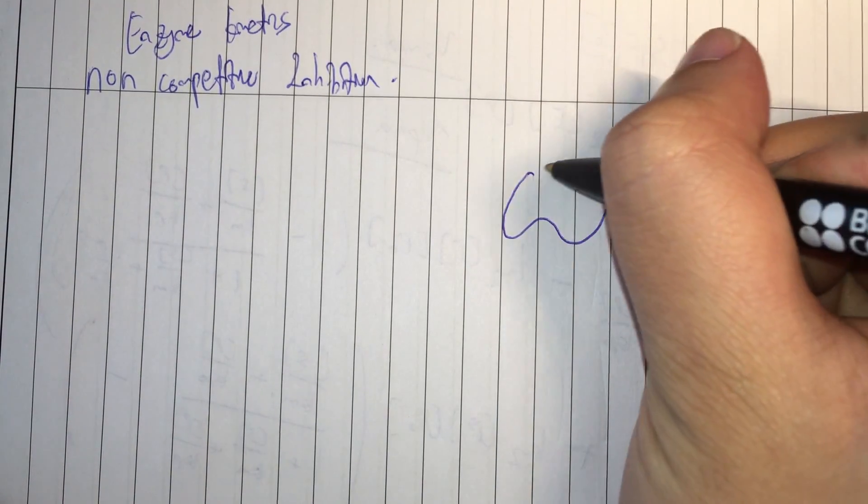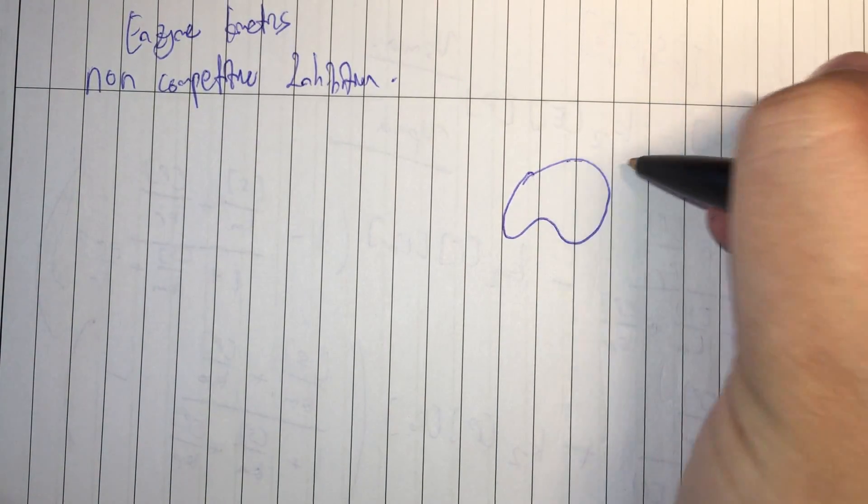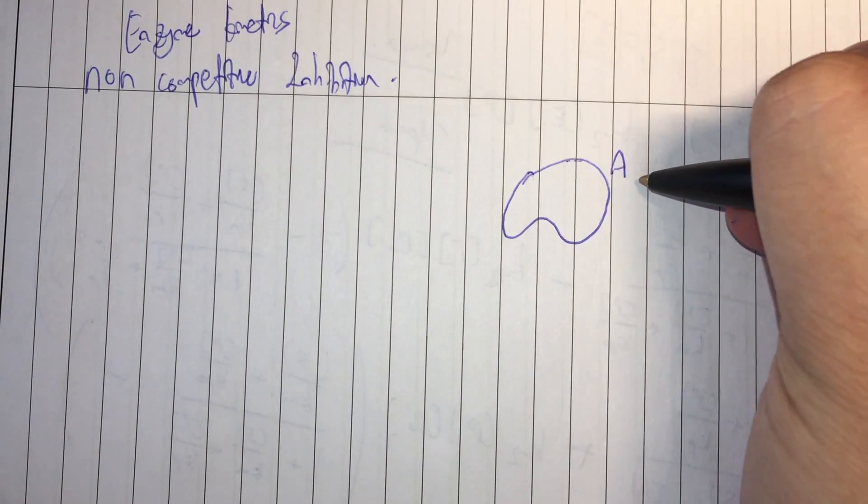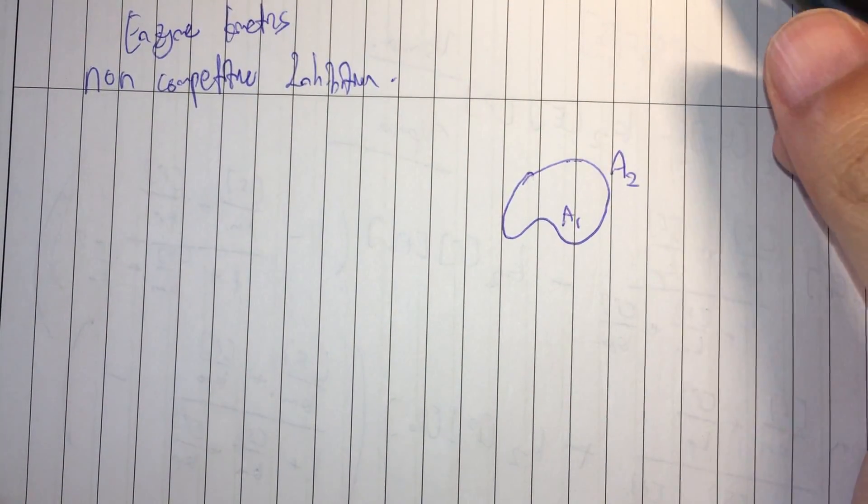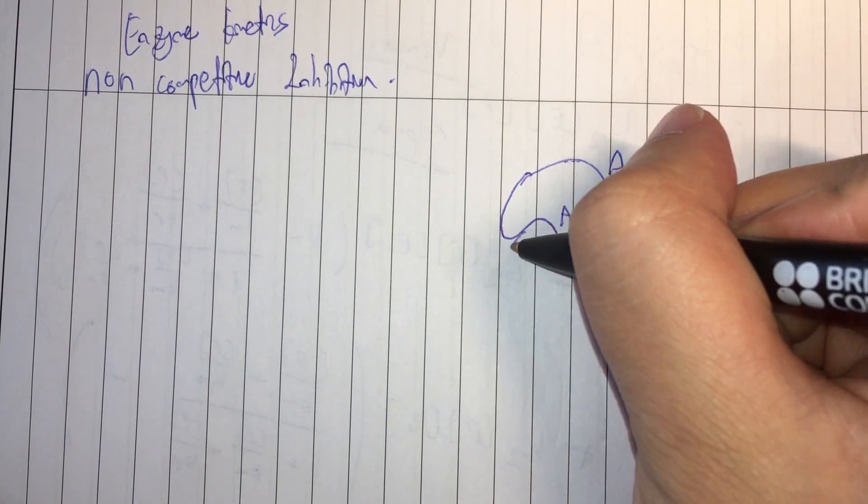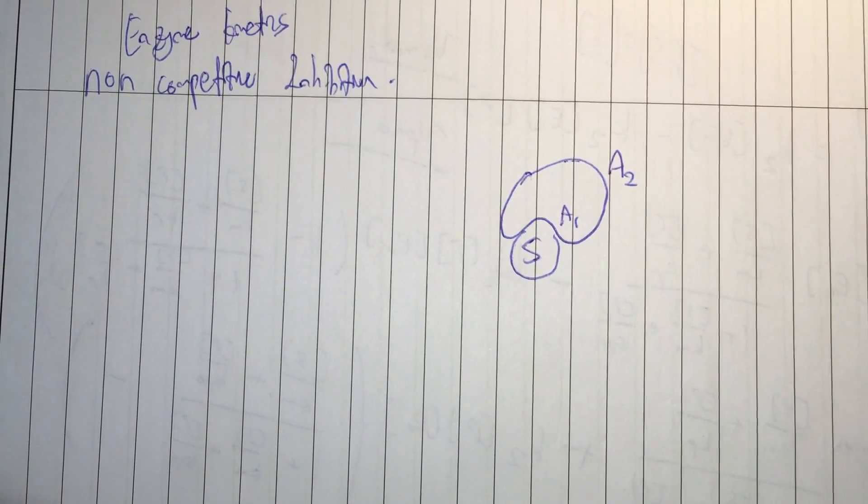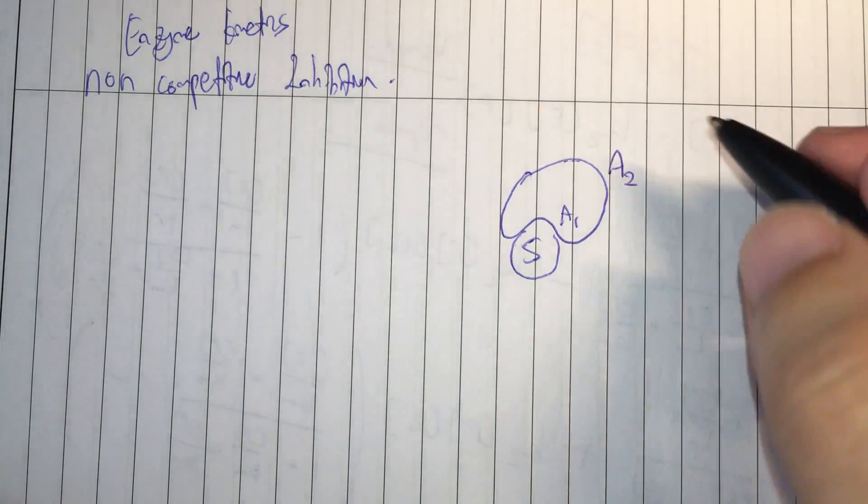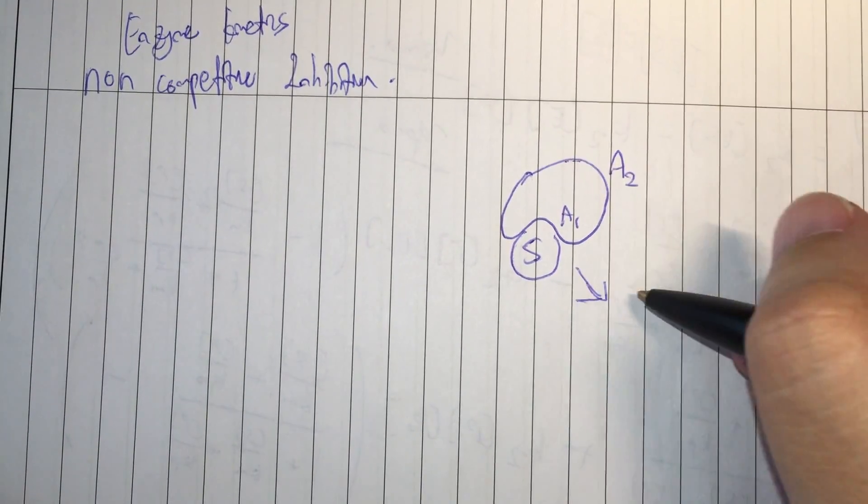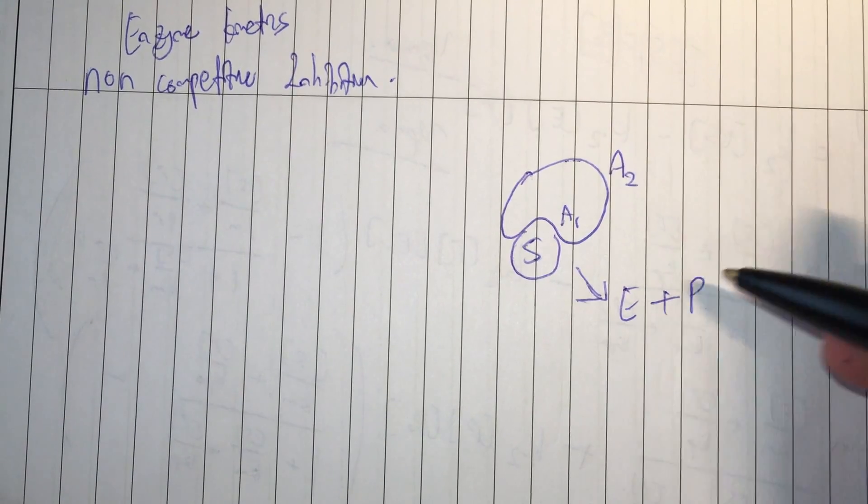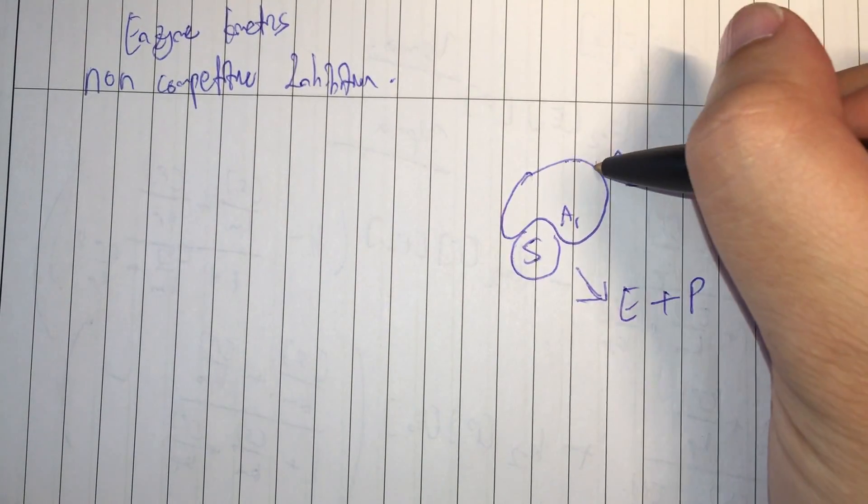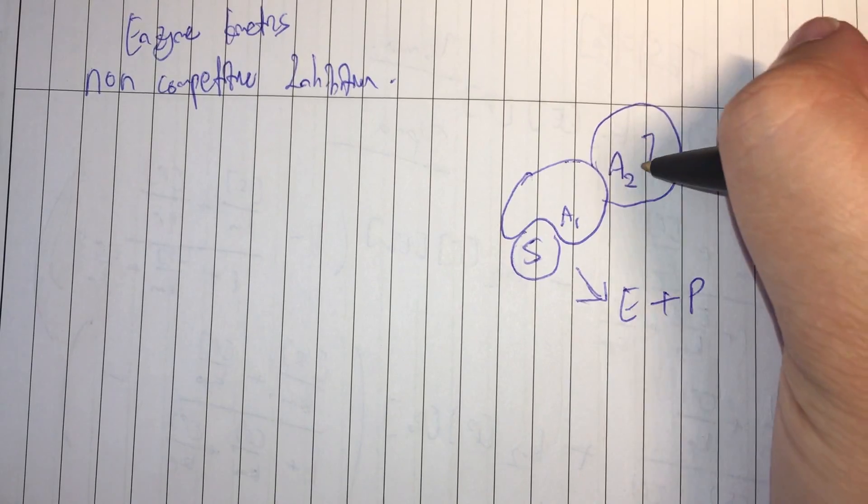So let's say you have an enzyme with two active sites. I'll call this active site 2, I'll call this active site 1. Active site 1 binds to the substrate. Active site 1 binds to the substrate so that it becomes the free enzyme plus the product. Active site 2 is where the inhibitor binds onto.